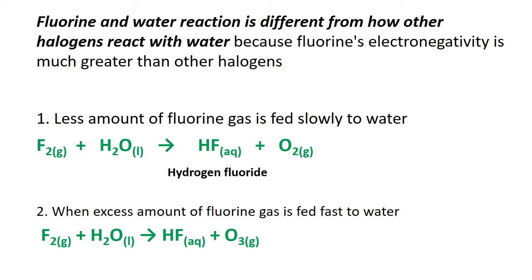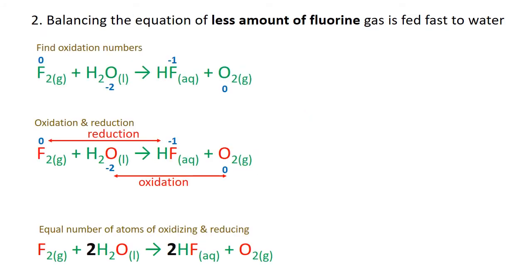When excess amount of fluorine gas is fed fast to water, this will give hydrogen fluoride and ozone as products. Hydrogen fluoride is a weak acid. You can see the balanced reactions now.